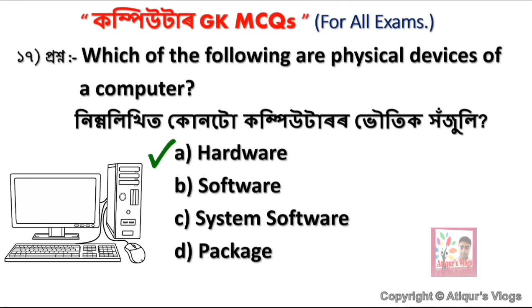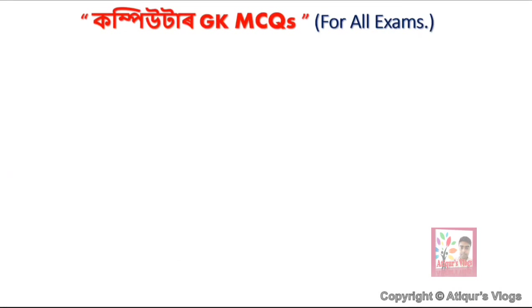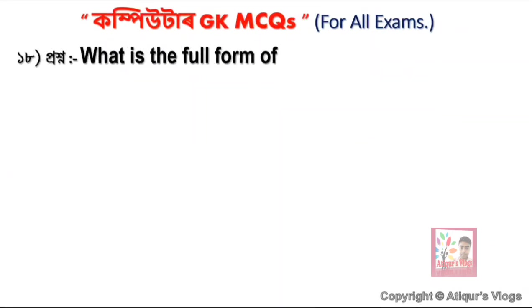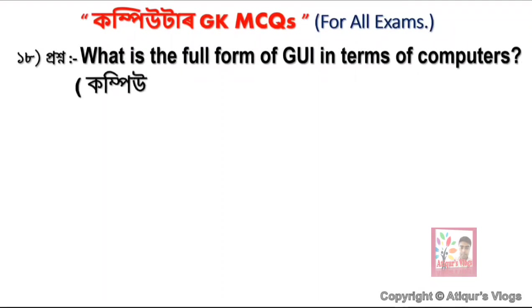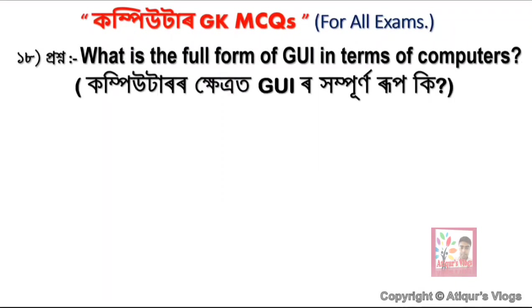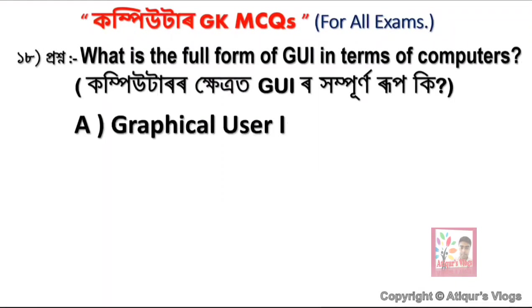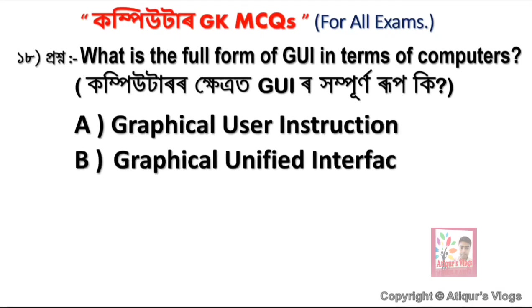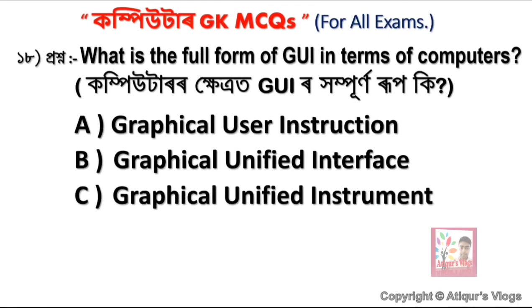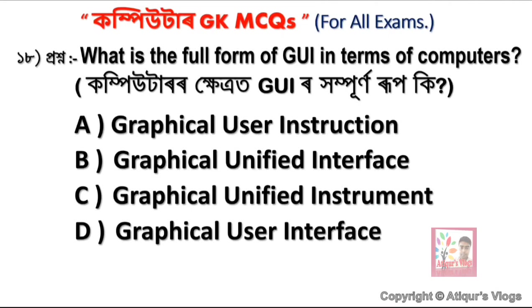What is the full form of GUI in terms of computer? Option A is Graphical User Instructions, option B is Graphical Unified Interface, option C is Graphical Unified Instrument, and option D is Graphical User Interface. The correct answer is option D — Graphical User Interface.